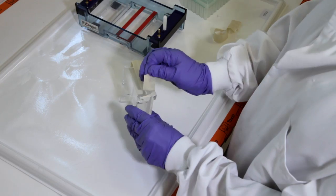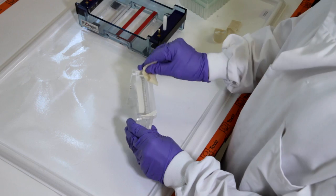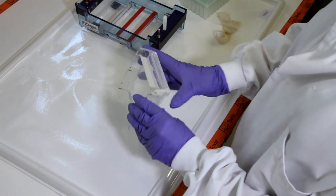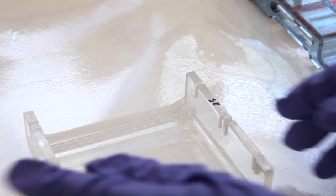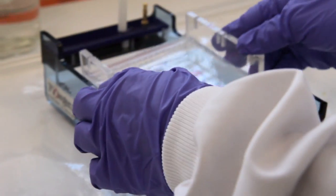It's easy to tell when the gel is set because it goes slightly opaque. You can then load the samples onto the gel. Firstly you need to remove the tape or sealing ends if you've used them from the gel tray. Place the gel still in the tray into the gel tank.